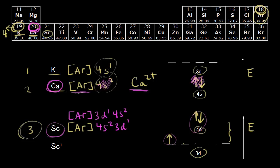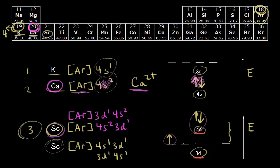How do we know the 4s orbital is actually higher energy than the 3d orbitals? We know from ionization experiments. For the Sc⁺ ion, the configuration is [Ar] 4s¹ 3d¹. We lost an electron from the 4s orbital — we went from 4s² to 4s¹. That only makes sense if 4s is highest in energy, because ionization removes the highest-energy electron, the one easiest to remove.